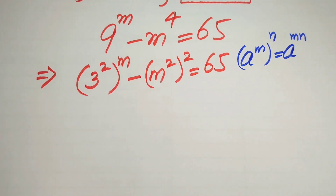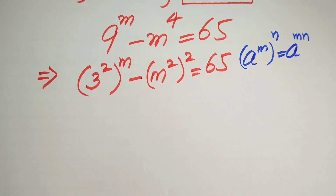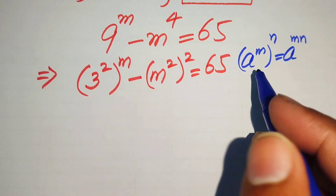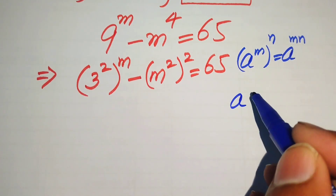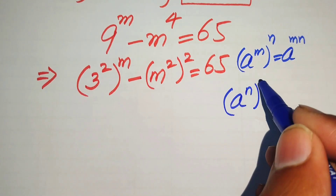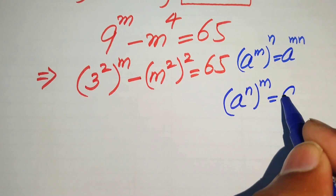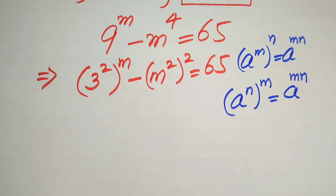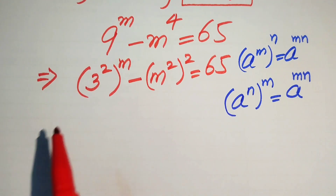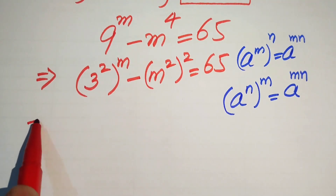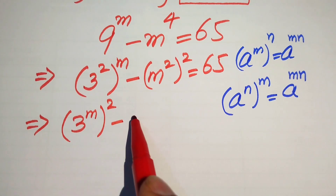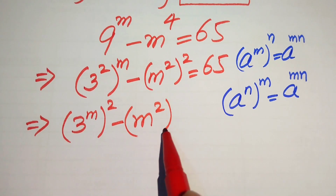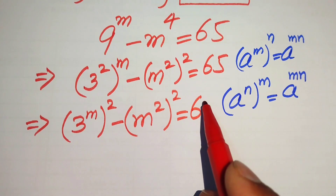We use another exponential law: if you interchange the two exponents, it gives the same answer — a to the power of n to the power of m equals a to the power of m times n. So we interchange the exponents and rewrite the equation as 3 to the power of m, whole squared, minus m squared, whole squared, equals 65.